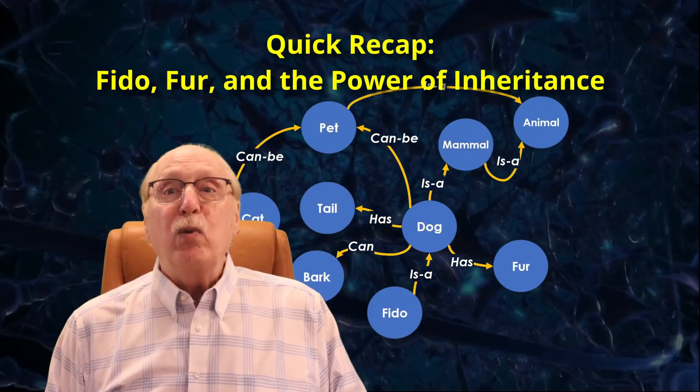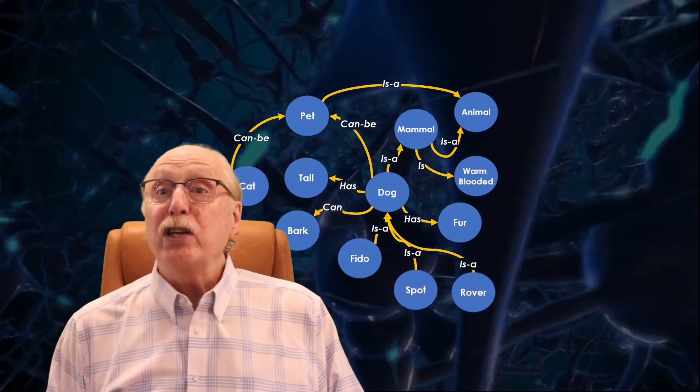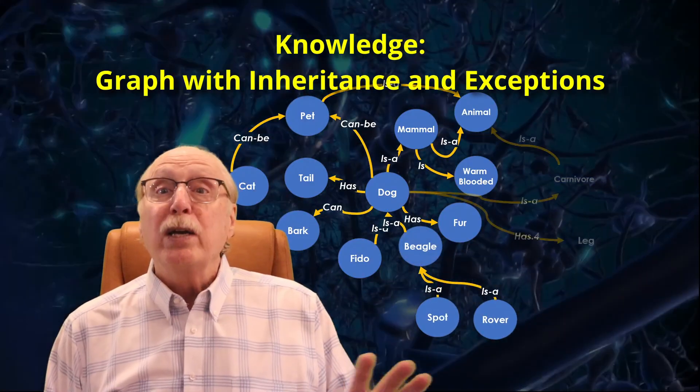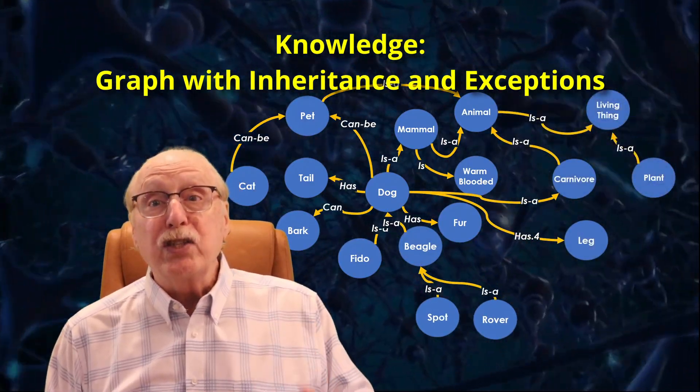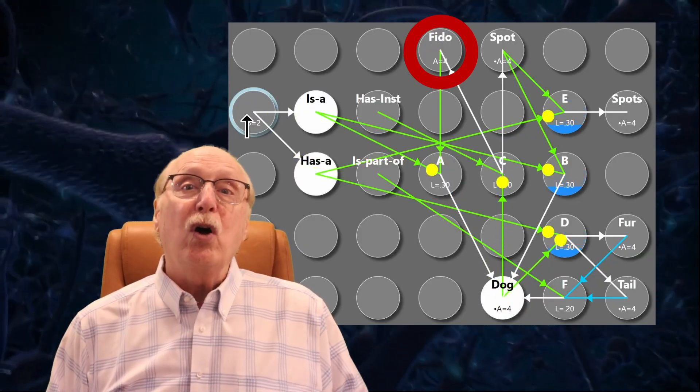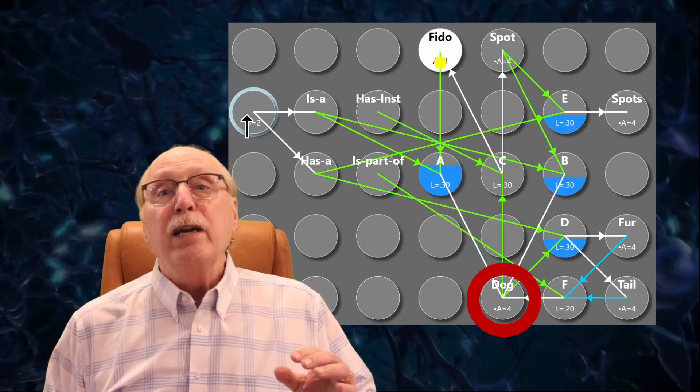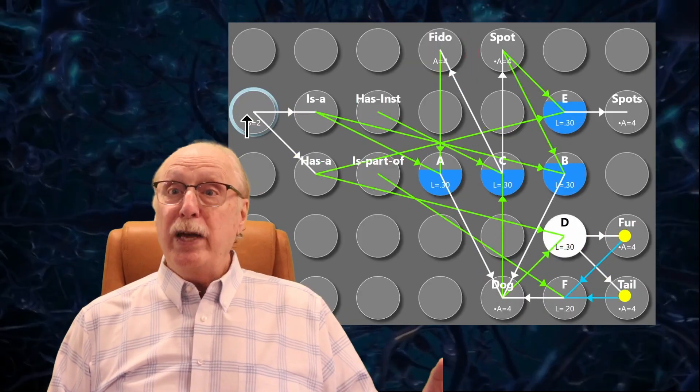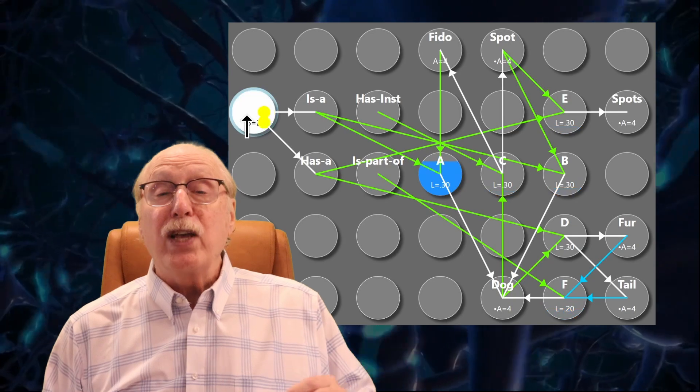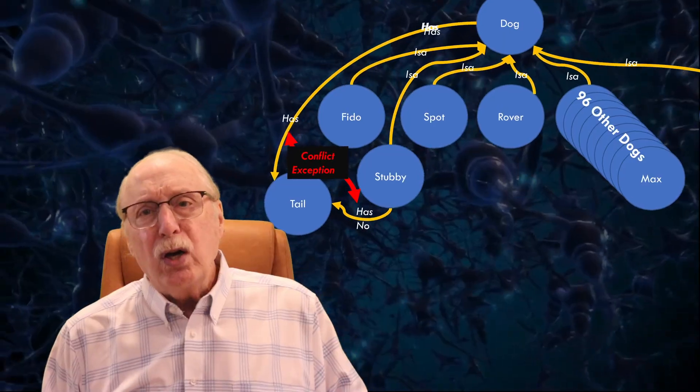Let me quickly recap. In the last video, I showed how knowledge can be represented as a graph of relationships complete with inheritance and exceptions. We can represent the concept that Fido is a dog with just a few neurons. Further, if a dog has fur, then Fido inherits the has fur attribute on the fly.